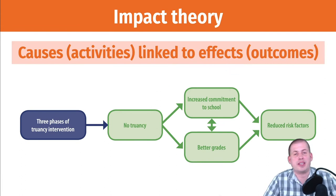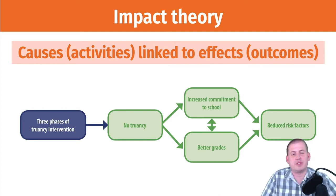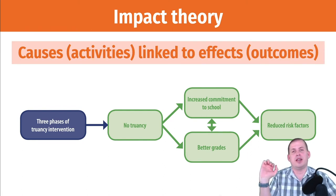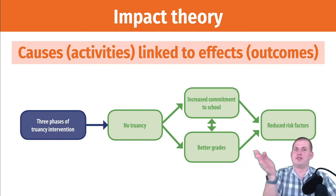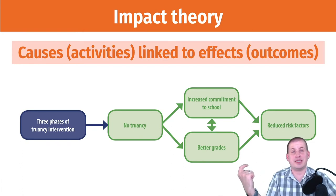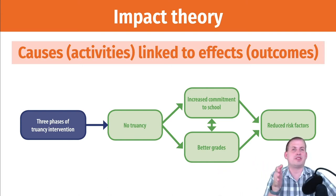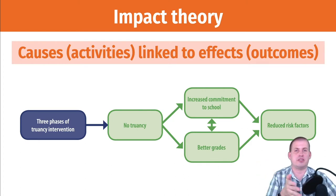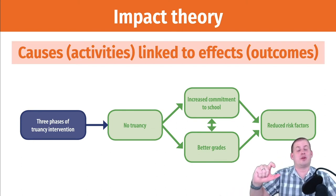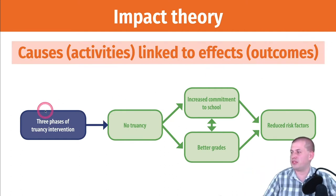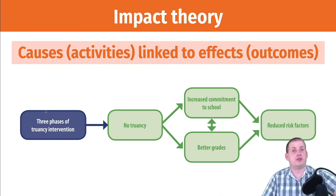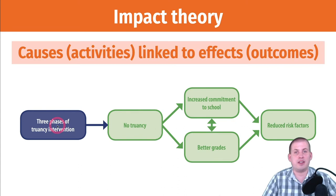An example of this is a program evaluation I did as an MPA student for a school district in Utah that had implemented a truancy court system. In Utah, if you're a teenager and you skip school a certain number of times, you can be sent to the juvenile justice system, which eventually transfers to adult detention. The school district wanted to eliminate that school-to-prison pipeline based on attendance.